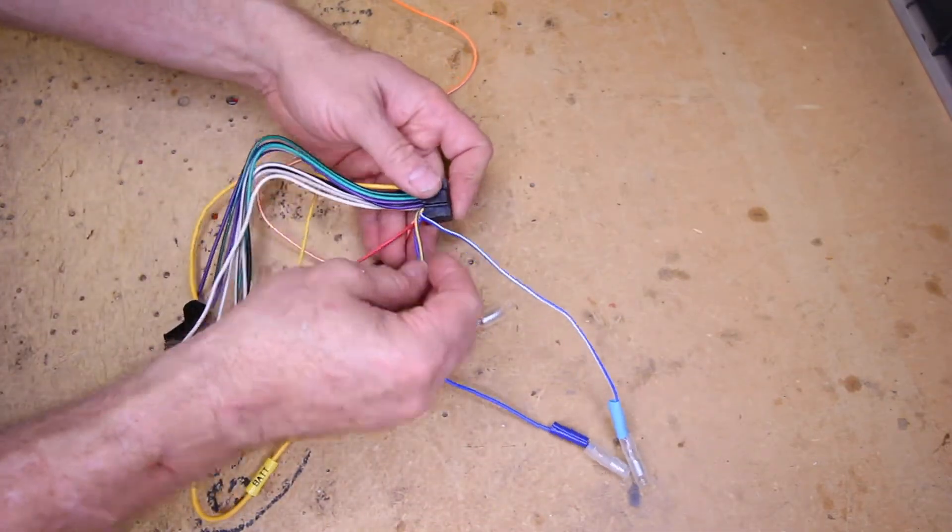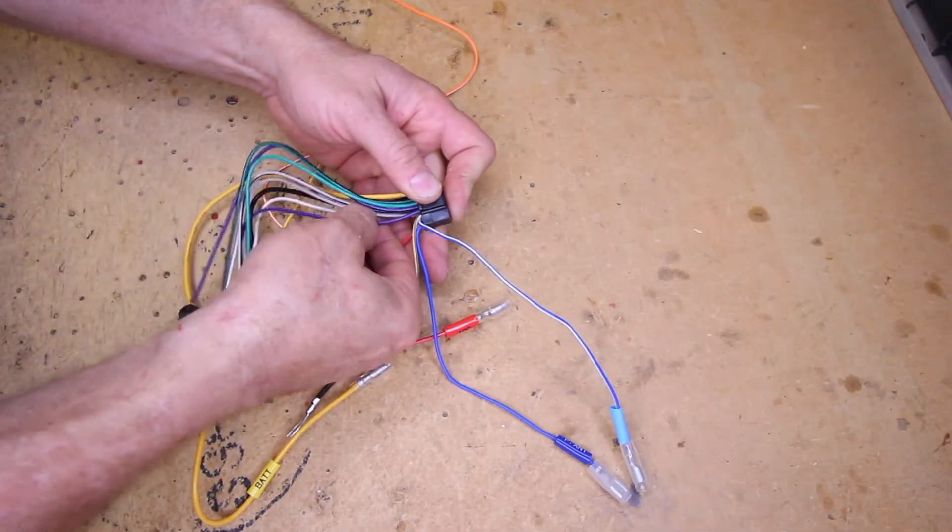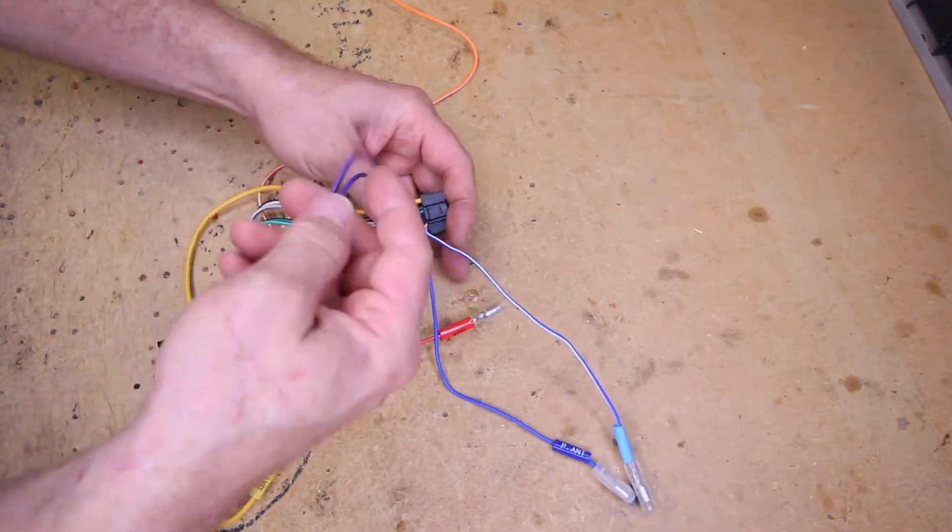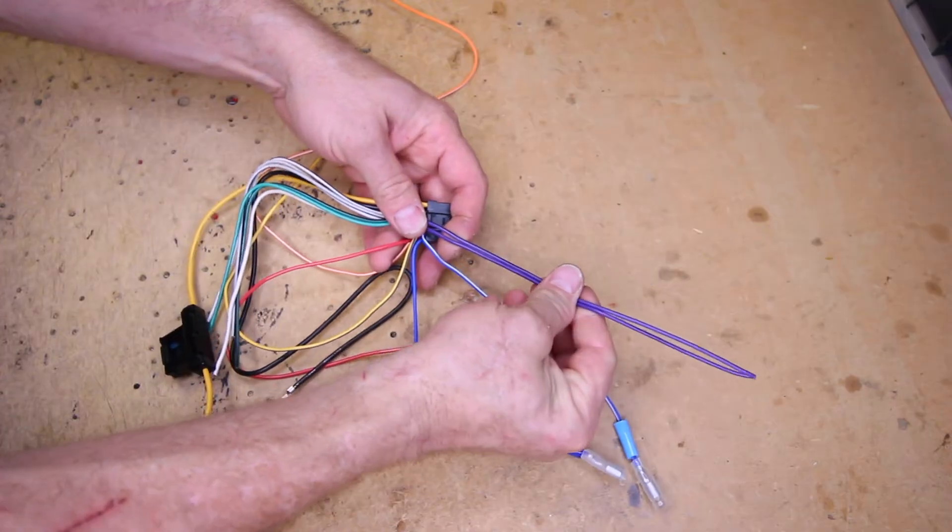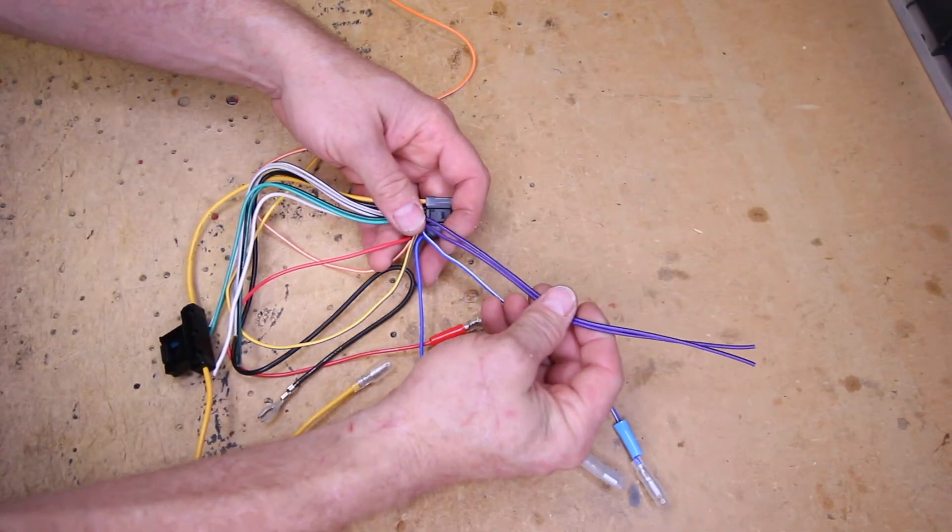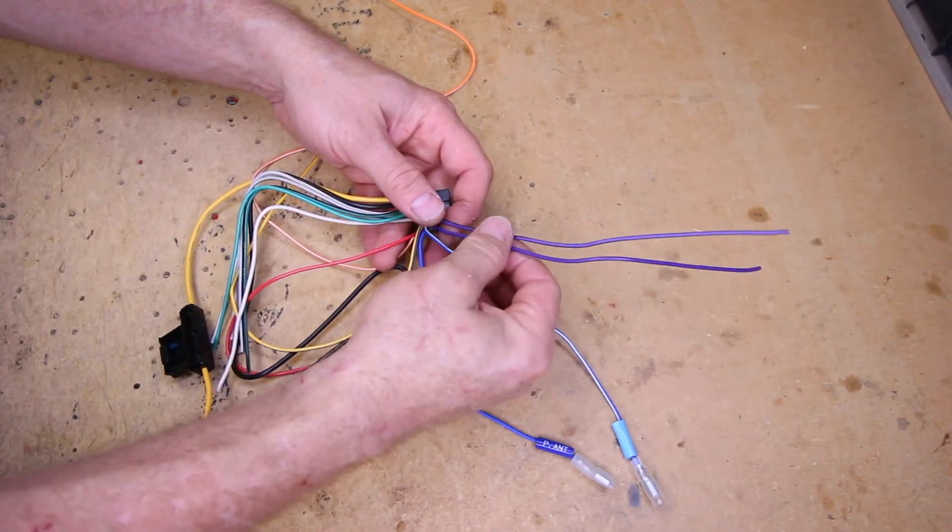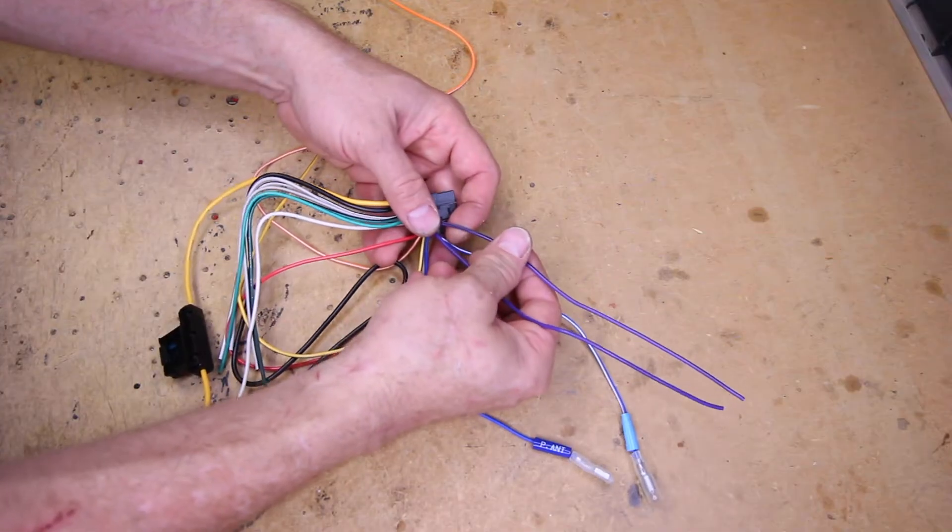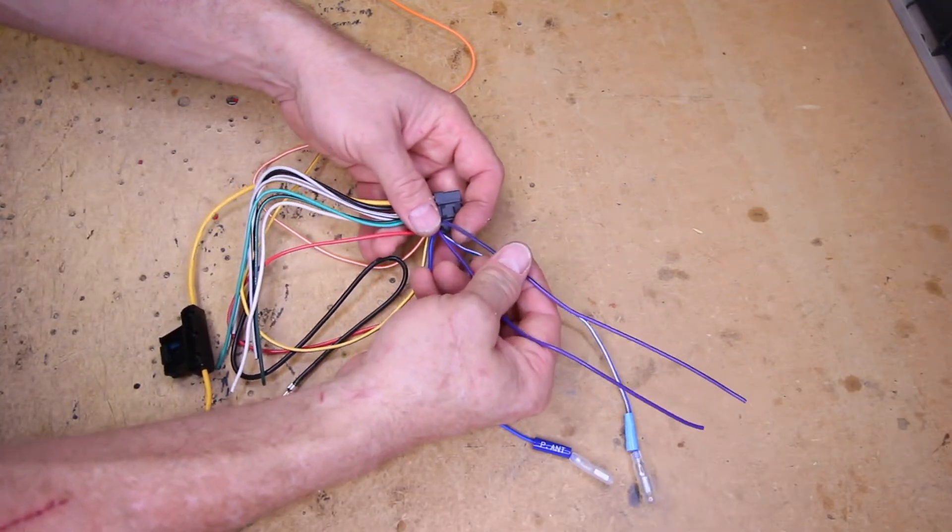Next you have the yellow blue, which we're going to come back to. Then you have a set of purples, which is going to be what we like to call number four, which is the rear passenger side speaker. There's a solid purple and a purple with a black stripe. The black stripes are always going to be negative.